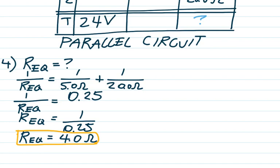This is a critical point: one over the equivalent resistance equals 0.25, so when you cross-multiply, the equivalent resistance is 4 ohms — not 0.25. This is also why they use 'equivalent resistance' instead of 'total resistance,' because the sum (25 ohms) is not the answer. In a parallel circuit the equivalent resistance will be less than any individual resistor, because adding branches gives more paths for current to flow, reducing resistance. So R_eq equals 4 ohms.